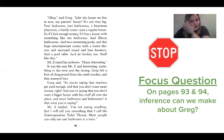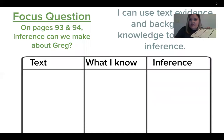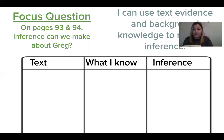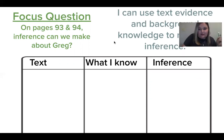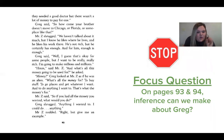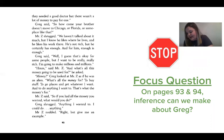So remember, when we make inferences we use this chart. I can use text evidence and background knowledge to make an inference. I want you to go ahead and make your own on a piece of paper. We're going to look back in the text first so we can make an inference about Greg. I think the big thing Greg talked about was all the things he wanted to do with his money. He says, 'I want to be really, really rich. I'm going to make millions and millions.' So I'm going to write on mine: Greg wants to be rich.